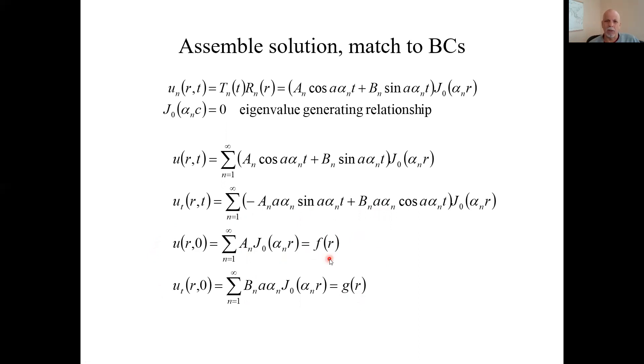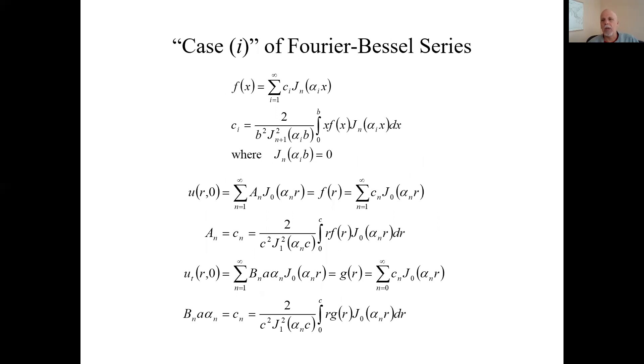What do we expand these guys with? We need to expand these functions with functions that look like this. These are Bessel functions. Remember from way back, we had a way to do that. We called it the Fourier-Bessel series. And it depended on what your eigenvalue generating relationship was. It was driven by the boundary condition. Here's that case one or case one. Here it is for a general Bessel equation of order n. We're going to be doing it for a Bessel equation of order zero. But here's how to expand such a function. This is your eigenvalue generating relationship. Here's the Fourier-Bessel series. And here's how you compute those coefficients. So we have ways to expand our functions f and our functions g.